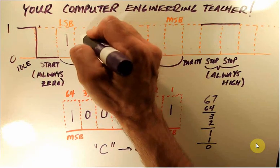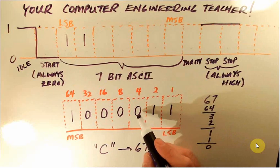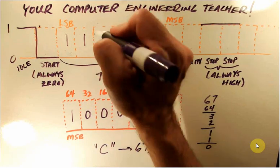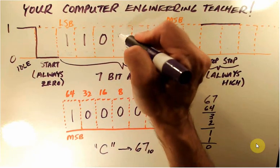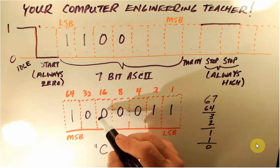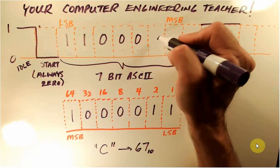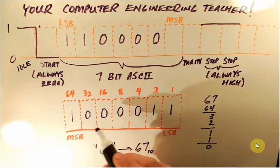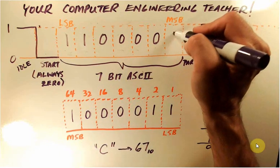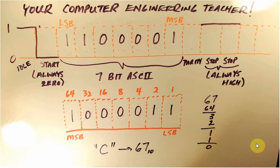This next one here is also a 1. And then we go to the 4's position next, that's a 0. We go to the 8's position next, that's a 0. We go to the 16's position, that's a 0. Go to the 32's position, that's a 0. And we go to the 64's position, that's a 1. That's our most significant bit.